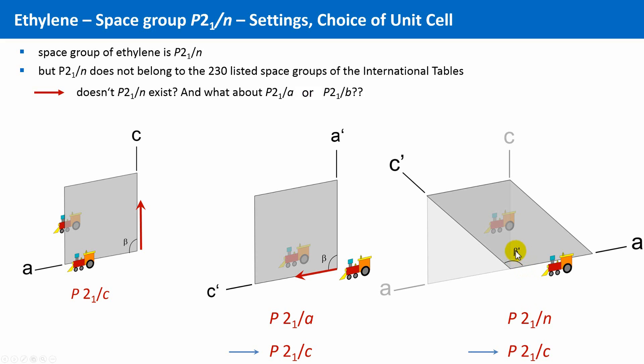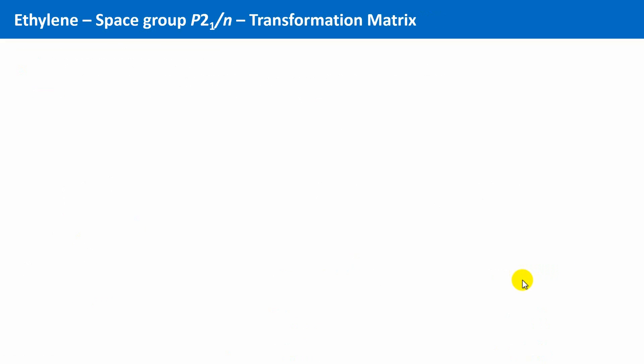And here the angle beta differs more strongly from 90 degrees than before. We have a very skew, a very oblique cell. This is sometimes the reason why researchers choose the P21/n setting instead of the conventional setting P21/c, namely when this angle is more closely to 90 degrees.